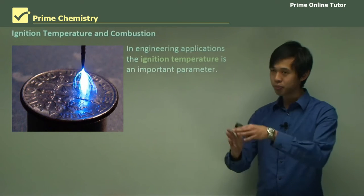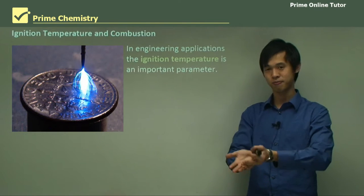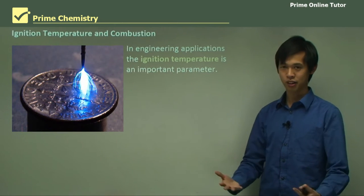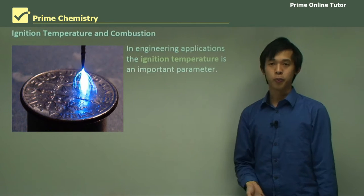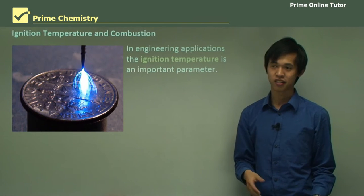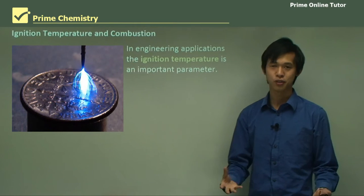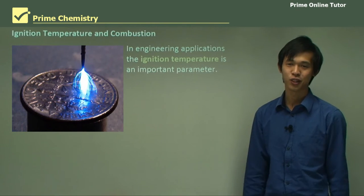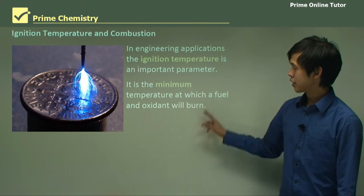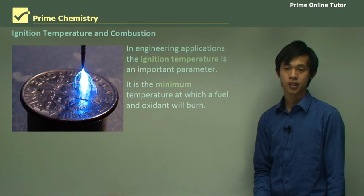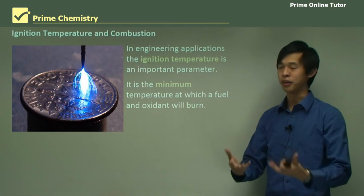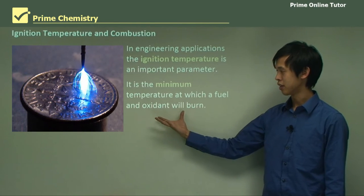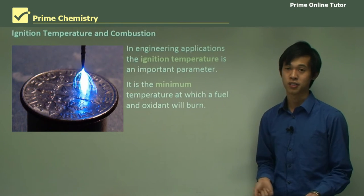Now let's talk about ignition temperature — moving from the thermodynamic definition of temperature to a more practical application. As an engineer, I like to talk about engineering applications. The ignition temperature is really important. In an engine, if you don't know the ignition temperature, you may not get the right temperature, and we have what's called a misfire. It's the minimum temperature at which a fuel and oxidant will burn together. You need to get the temperature to this level so that it will burn, and a spark — which is really, really hot — is likely high enough to get a fuel and oxidant to burn, though it's only a very small source.